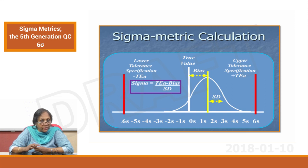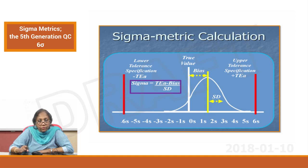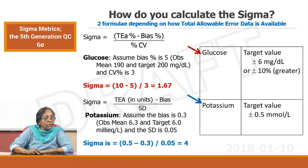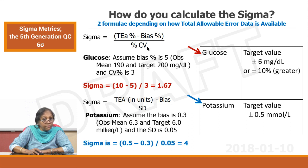These are important factors you can calculate. I am not talking about critical systematic error in this video, but the Labs for Life module — Volume 1 on this site — has more explanation about critical systematic error, and I would suggest whoever is interested please go and read that. Continuing with sigma calculations here: sigma equals either TEA in units minus bias divided by SD, or TEA in percentage minus bias percentage divided by CV percentage. Both can be done.